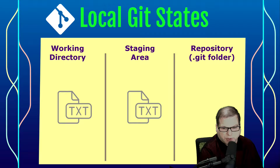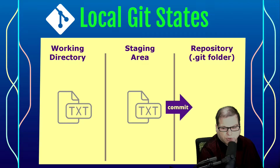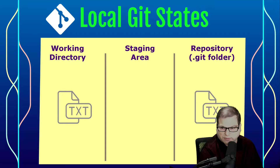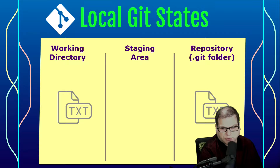At this point, they would be in both the staging area and the working directory. And then finally, we'll commit those changes into the repository. Everything in the staging area gets committed all at once in an atomic commit. Any changes that are made into the repository through the commit process will affect the history of the Git repository.